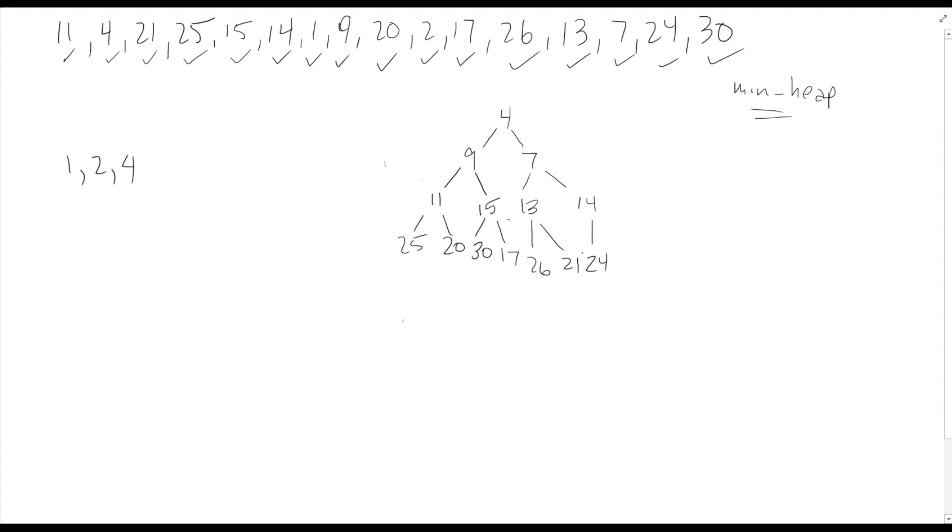So our first step is to swap the 1 and the 30. And then we can safely delete the 1. Of course, now our 30 is going to be violating our invariant again, out of order with some of its children. So now we're going to do that sink down operation. And we need to remember that when we sink our element down, our 30 down here, we picked the smaller of its children to swap with. So we swapped with the 2. Now notice the 2 is the new minimum.